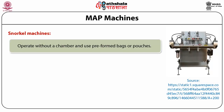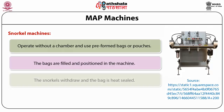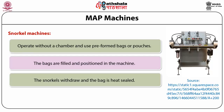Snorkel machines operate without a chamber and use pre-formed bags or pouches. The bags are filled and positioned in the machine. The snorkel is introduced into the bag, draws a vacuum, and introduces the modified atmosphere. The snorkels withdraw and the bag is heat sealed. Bag-in-box, bulk products, and retail packs in large MAP master packs can be produced on these machines.